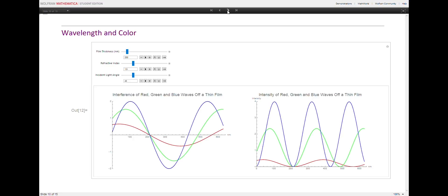The total color that we see reflected off a point on the film surface is a combination of these three waves proportional to their intensities.